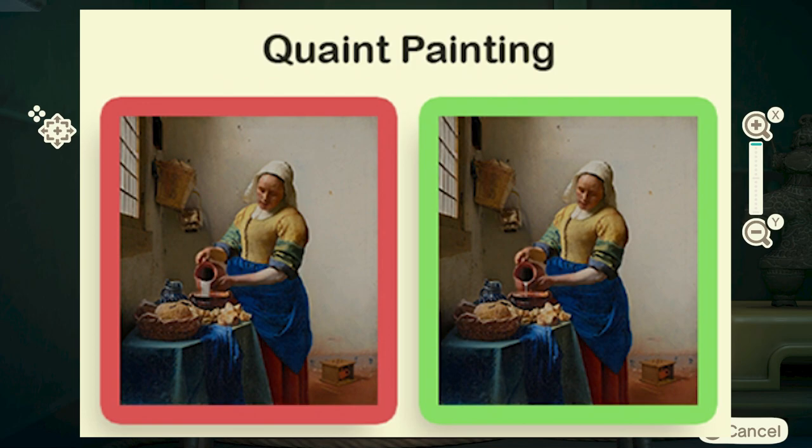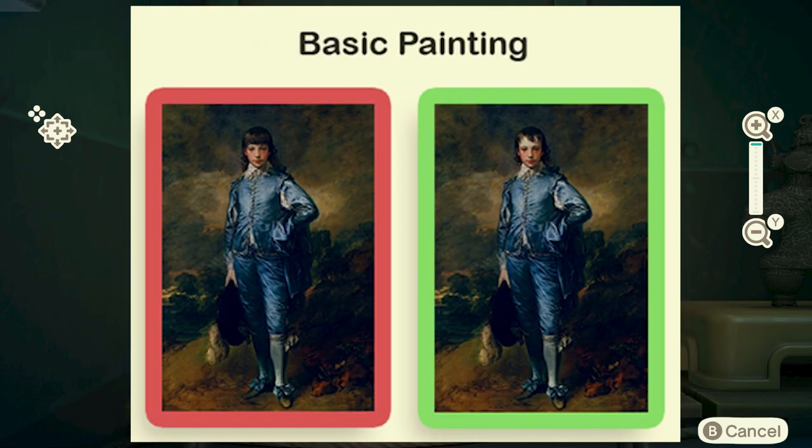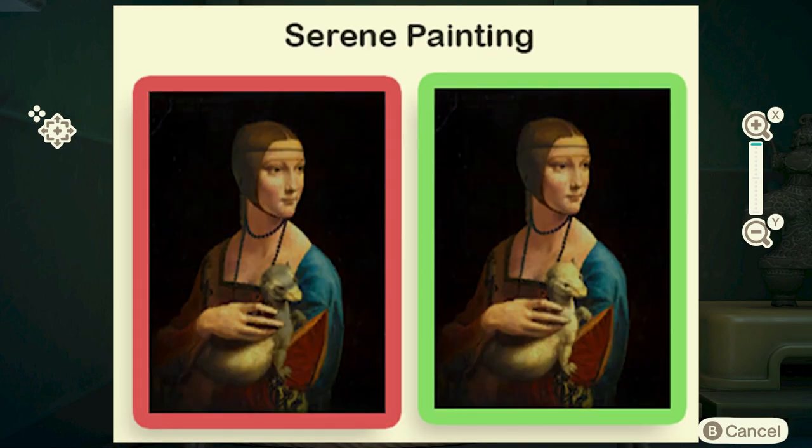In the quaint painting, the fake one shows her pouring a lot of water out of the little jug, while in the real one she's pouring a lot less. In the basic painting, the fake one is where the hair covers the whole forehead, where the real one has the hair only in the middle of the forehead. In the serene painting, the animal the lady is holding has a black coat in the fake one, whereas in the real painting it's basically a full white animal.